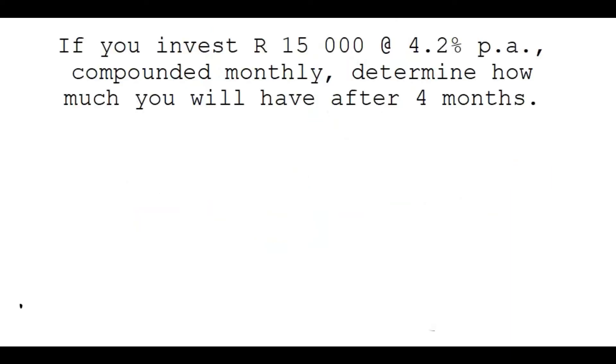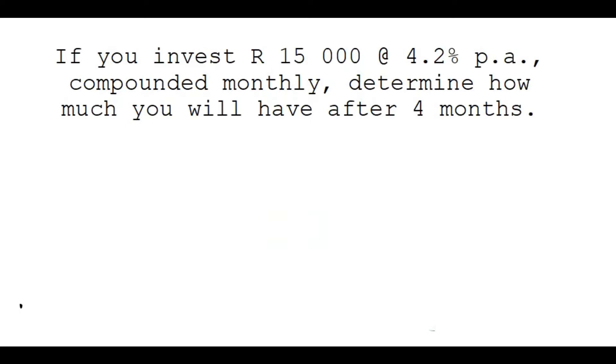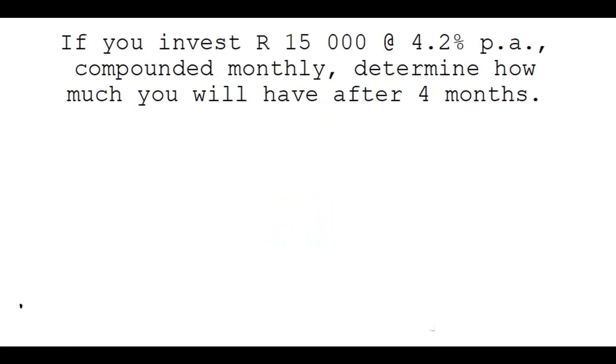Let's look at an example and apply all of this. So if you invest 15,000 Rand, that's your principal, your start amount. At 4.2% per annum, that's your interest rate. Go and divide that by 100, then we say 0.042.